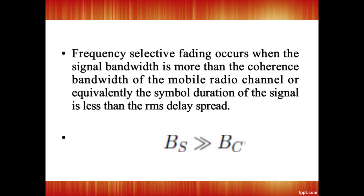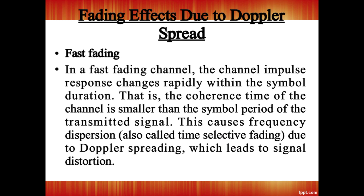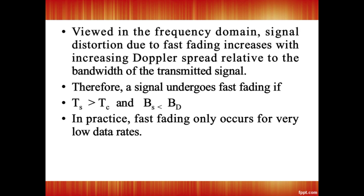Fast fading: in a fast fading channel, the channel impulse response changes rapidly within the symbol duration. Viewed in the frequency domain, signal distortion due to fast fading increases and decreases with Doppler spread relative to the bandwidth of the transmitted signal. Therefore, a signal undergoes fast fading if Ts > Tc and Bs < Bd. In practice, fast fading only occurs for very low data rates.